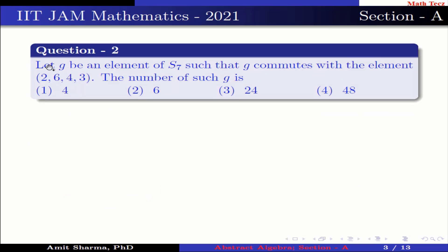Question number 2: Let g be an element of S7 such that g commutes with the element (2 6 4 3). The number of such g is: option 1: 4, option 2: 6, option 3: 24, option 4: 48.